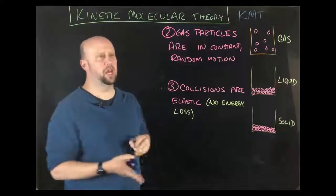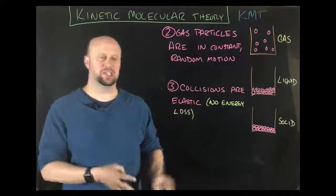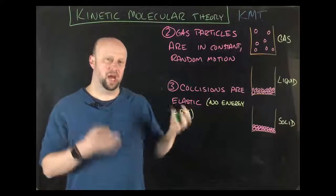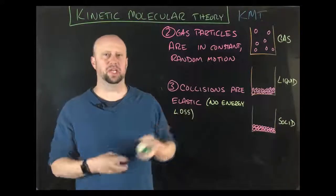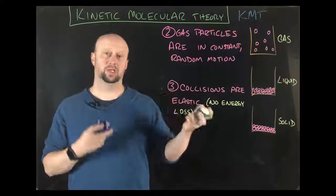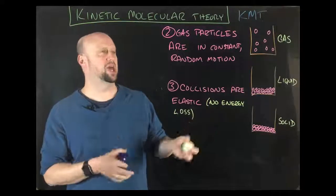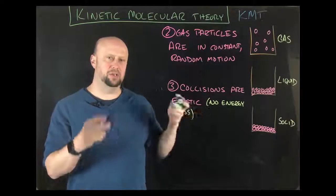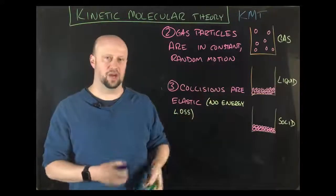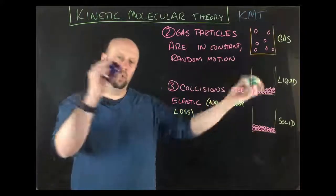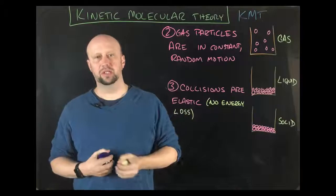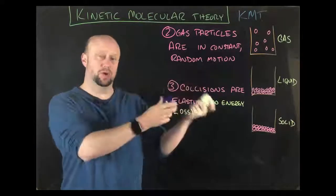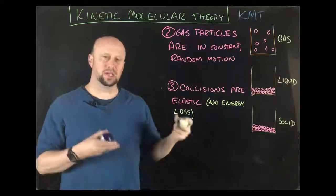Points two and three of KMT apply specifically to gases. Point two: gas particles are in constant random motion. In a container of gas, particles are moving around all over the place. They have a lot of kinetic energy — related to their speed and temperature. There's no predefined pattern to their motion; when they hit something, they bounce off. That something could be the sides of the container, or they can run into each other.